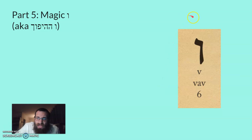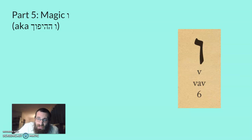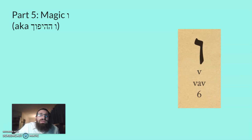The other exception is the magic vav, or vav haipuch. In the Torah — not in modern Hebrew — a vav at the beginning of a verb can flip the tense. For example, 'vayomer' or 'vayedaber': based on the conjugation with a yud at the beginning, 'vayedaber' should mean 'and he will speak,' but in the Torah it means 'and he spoke.' A vav at the beginning can flip the meaning. For shoresh quizzes I will never ask you with a vav haipuch, but when learning Chumash you should know this can happen.